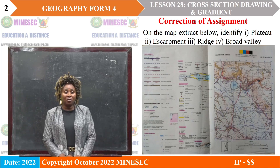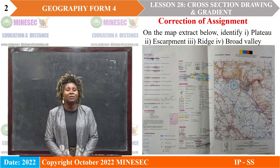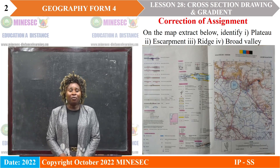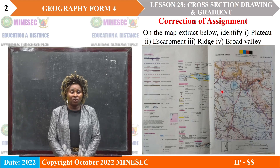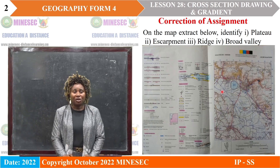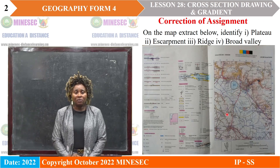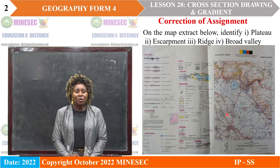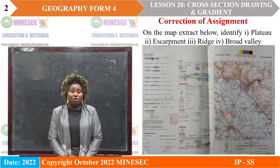The assignment is on a topographic map, and on it you are expected to identify a plateau, an escarpment, a ridge, and a broad valley. This is a topographic map and a plateau. Remember in the last lesson, a number of signs were given to demonstrate how features are formed on a topographic map using contours.